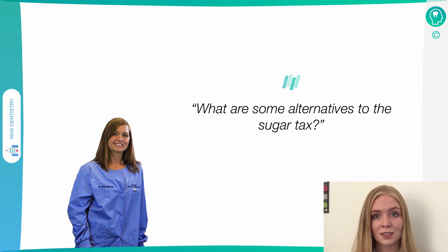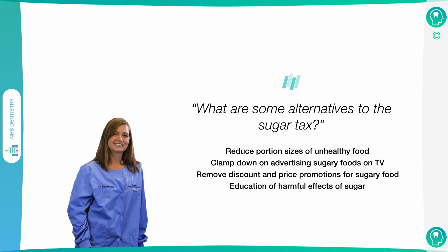Another question you could be asked is: what are some alternatives to the sugar tax? Some ideas include cutting down portion sizes of unhealthy foods, reducing advertising for sugary foods so they're less appealing in the first place, reducing the number of discounts and sales promotions on sugary foods — such as buy-one-get-one-free offers — and educating people about the harmful effects of sugar. Many people don't understand how dramatically sugar affects their teeth, so education is key.